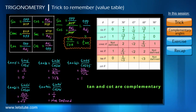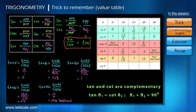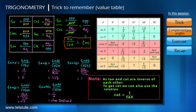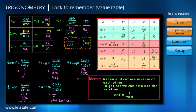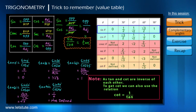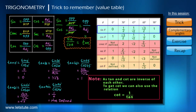Again by using the concept of complementary angles, we get the values for cot, because tan and cot are the same for any two angles which add up to 90 degrees. So to complete this table, we only need to know the way to get the sine values for all the angles. This is how we prepare the trigonometric ratio value table.